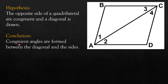Now, you are to prove that congruent angles are formed between the diagonal and the sides — these are angles 1 and 4, and angles 2 and 3. So you have to prove that angle 1 is congruent to angle 4 and angle 2 is congruent to angle 3. If you can prove this restatement, then we have proven the geometric statement in sentence form.